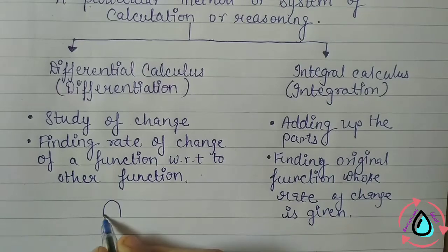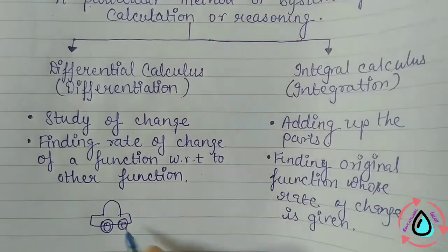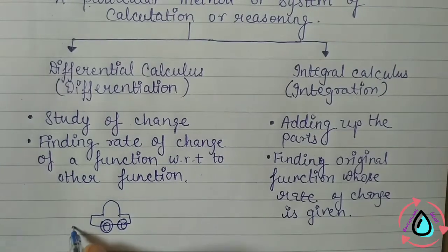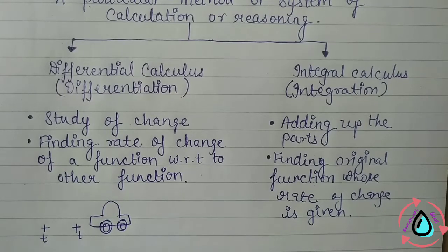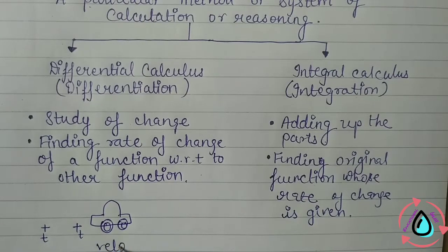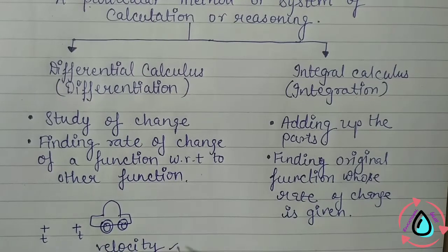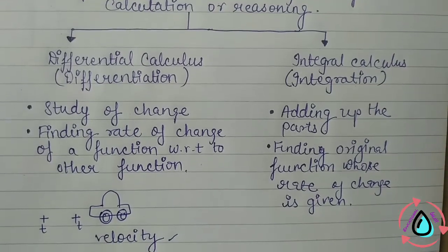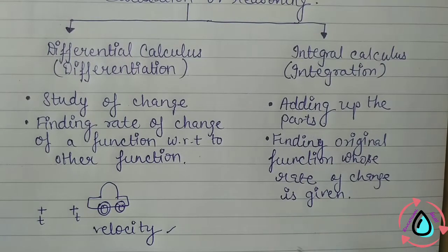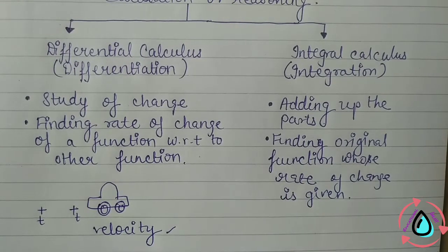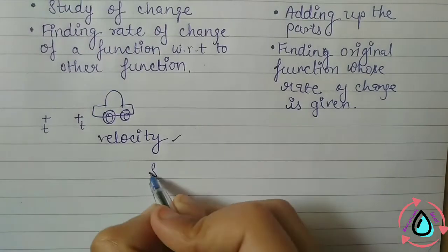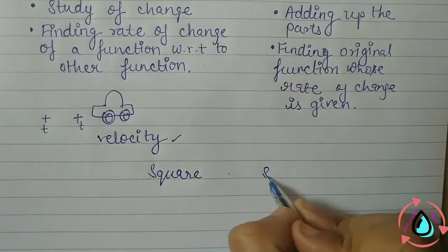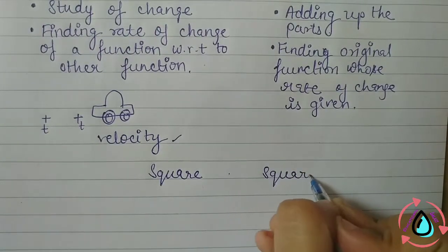Let's look at a real life example. Suppose there is a car — if we observe its speed or velocity at different time intervals, that is differentiation. When the velocity is already given and we find the change, that is integration. The relationship between differentiation and integration is like the relationship between squaring and taking the square root.